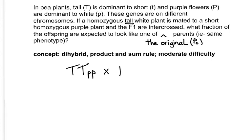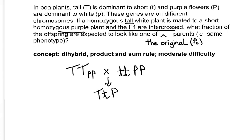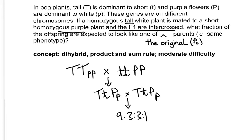Short is recessive so they'll have two little t's, and it's homozygous purple so we put big P's there. Then we intercross the F1. The F1 will be all doubly heterozygous. When we intercross them we set up this type of cross, and from this you're going to get a 9:3:3:1 phenotypic ratio.